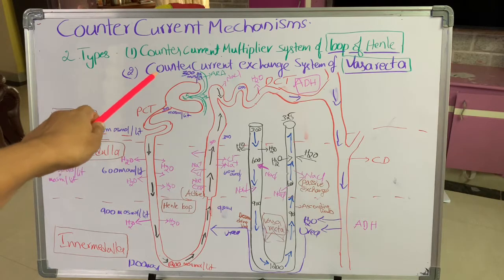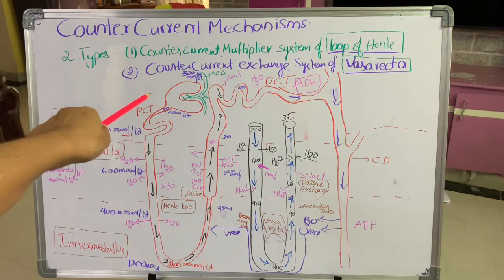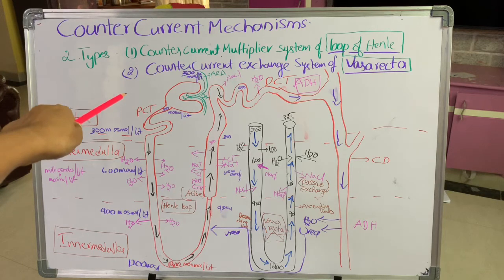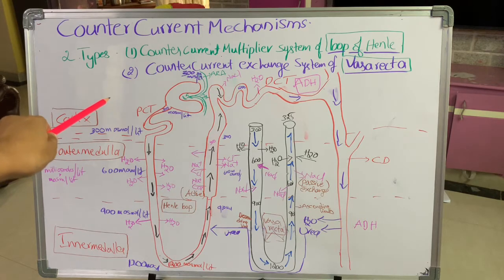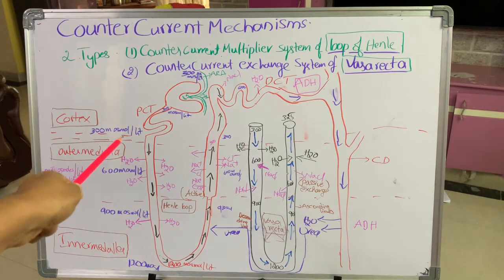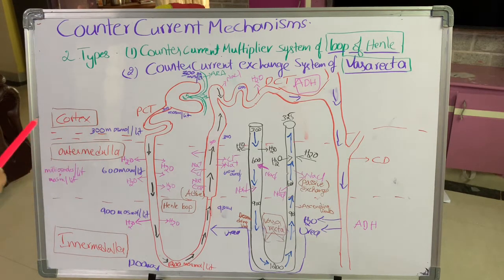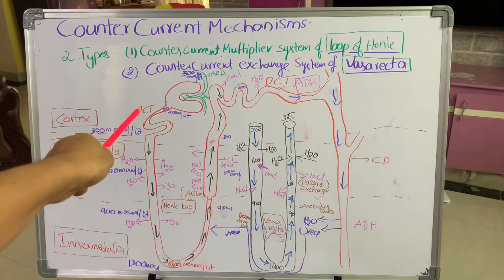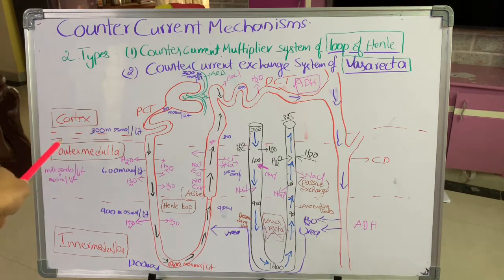This is the nephron structure — this is the Bowman's capsule and the green one is the glomerulus. As the afferent renal arteriole enters the glomerulus, it filters the blood and the primary urine is formed in the Bowman's capsule. This primary filtrate is isotonic to the blood plasma. The osmolarity of blood plasma is 300 milliosmoles per liter — osmolarity is a measure of concentration of a solution in terms of solute particles per liter. So the primary urine is also 300 milliosmoles per liter, making the two solutions isotonic.